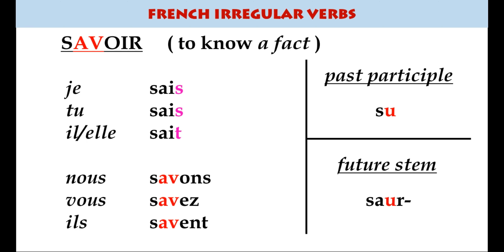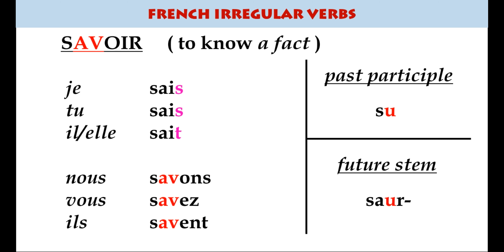There are two words in French for knowing something. The first is savoir: je sais, tu sais, il sait, then nous savons, vous savez — where the nous and vous forms mirror the infinitive — and ils savent. The past participle is su, and the future stem is quite different too: the v disappears and becomes a u.